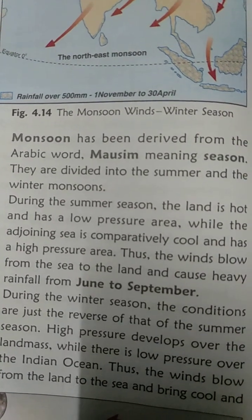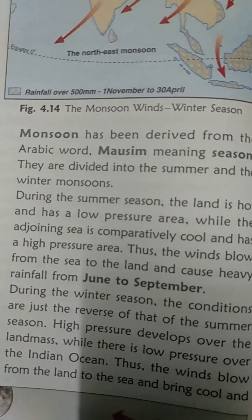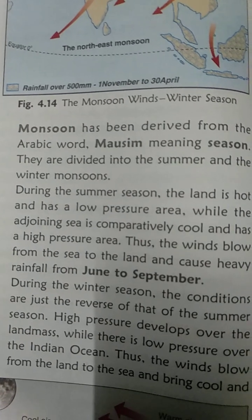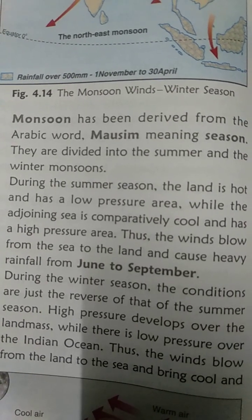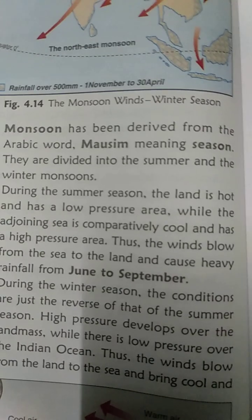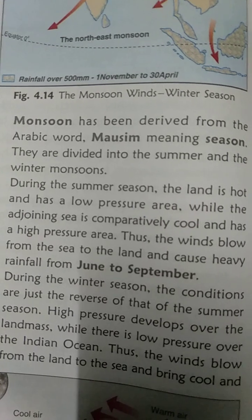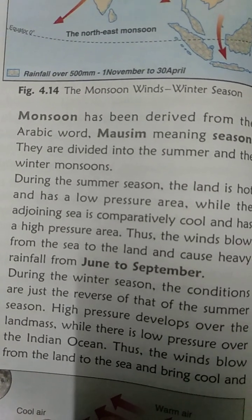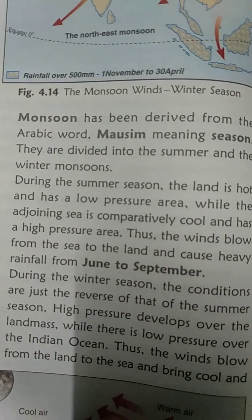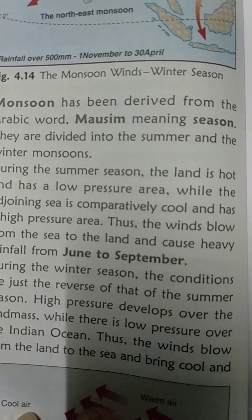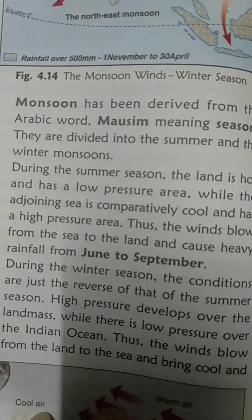Monsoons are divided into summer and winter monsoons. During the summer season, the land becomes very hot and develops low pressure, while the sea next to the land remains cool and has high pressure. Thus the wind blows from the sea to the land, causing high rainfall from June to September.